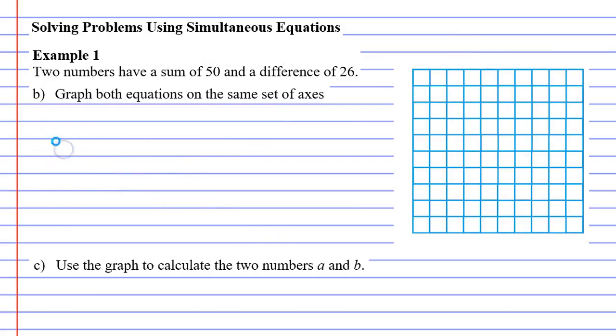We're going to use these equations later on, so I'm going to copy them and move to our next slide. Now, question B says, graph both equations on the same set of axes. So I need two axes, an x-axis as well as a y-axis. We need to pick some values here. Thinking back to the question, we're told that the two numbers have a sum of 50 and a difference of 26. So I reckon these numbers are somewhere between 1 and 50. I reckon I'll go as high as 50 for the x and as high as 50 for the y.